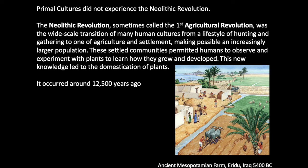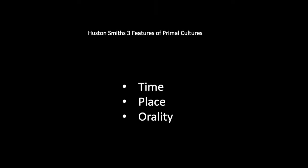Here's a drawing of what an ancient Mesopotamian farm might have looked like, shortly after the Neolithic Revolution in Iraq — around 5400 BC. Houston Smith describes three features of primal cultures: the way they think about time, place, and how they are oral in their cultures. Houston Smith is an author, religious anthropologist, and otherwise interesting scholar.